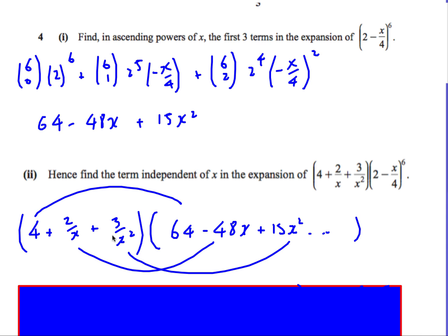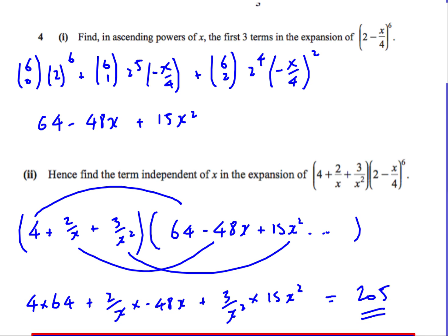So we basically do 64 minus 48x plus 15x squared. We put that in this bracket and then we just write out this bracket. And then what we're looking for is, well, how do we get something that doesn't have an x in? Well, 4 times 64, that's obviously not going to have an x in it. We're going to have 2 over x times by the minus 48x. Obviously, the xs will cancel out in this one. And 3 over x squared multiplied by 15x squared. Again, the x squared is going to cancel. So we just end up with a constant term. So we end up with 3 possible answers. 4 times 64, 2 over x times minus 48x, and 3 over x squared times 15x squared. If we simplify all that out, we end up with 205. So that's the constant term independent of x.